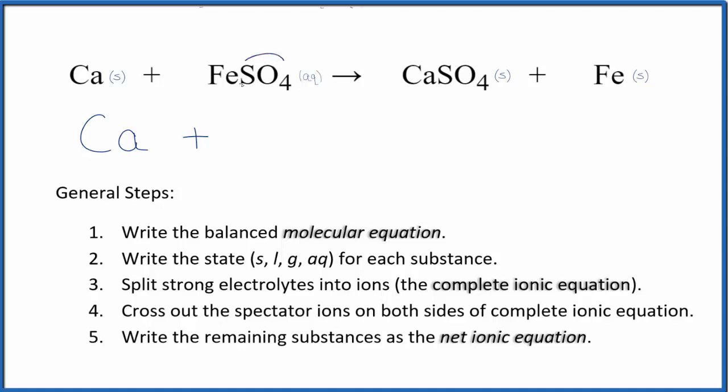For iron 2 sulfate, we know the sulfate, the whole thing is 2 minus. So the iron has to be 2 plus. So we'll have our iron 2 ion, Fe2 plus. And then we'll have our sulfate ion.